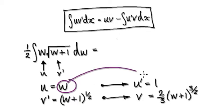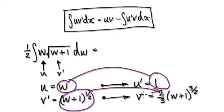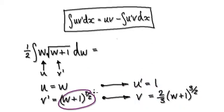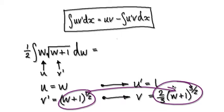Well, if u equals this, then u prime equals 1. If v prime equals this, then normal v would be this thing here. So you integrate it. So that will then give you this.